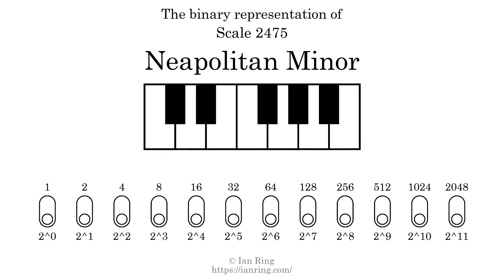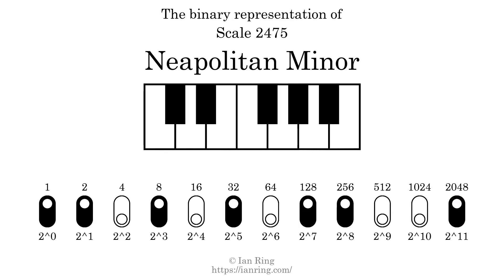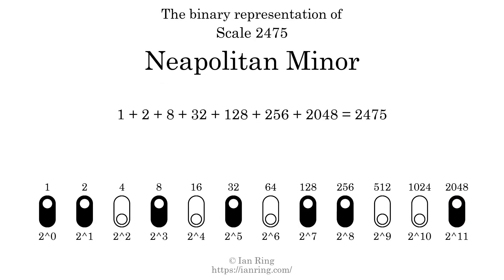The binary representation of this scale is determined by mapping tones of the scale to binary digits. Each binary digit represents a power of 2. To get the scale number, we add the powers of 2 together. The powers of 2 that are present in the scale, all added together, equals 2475.